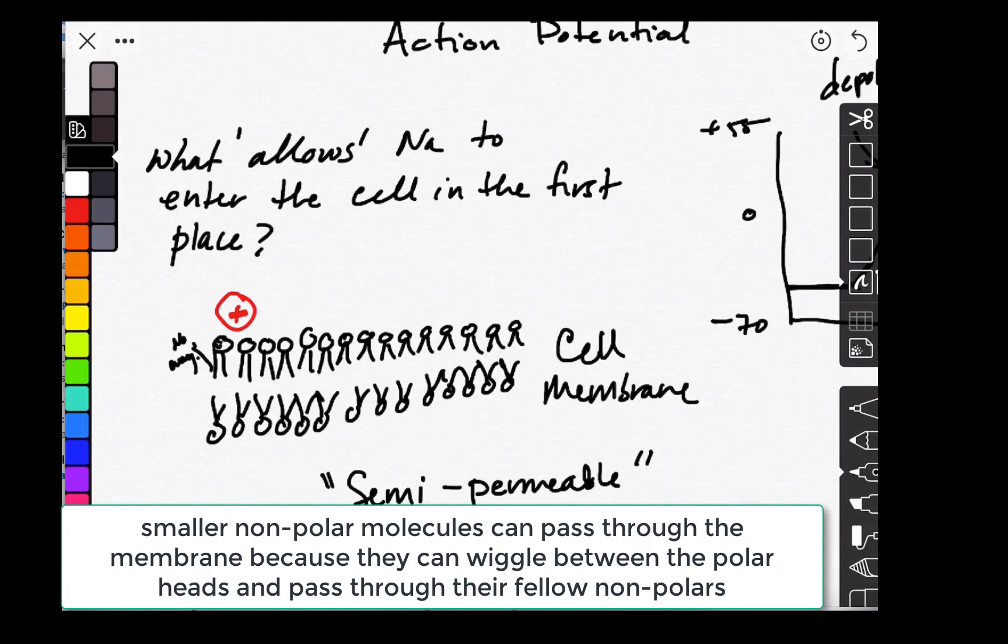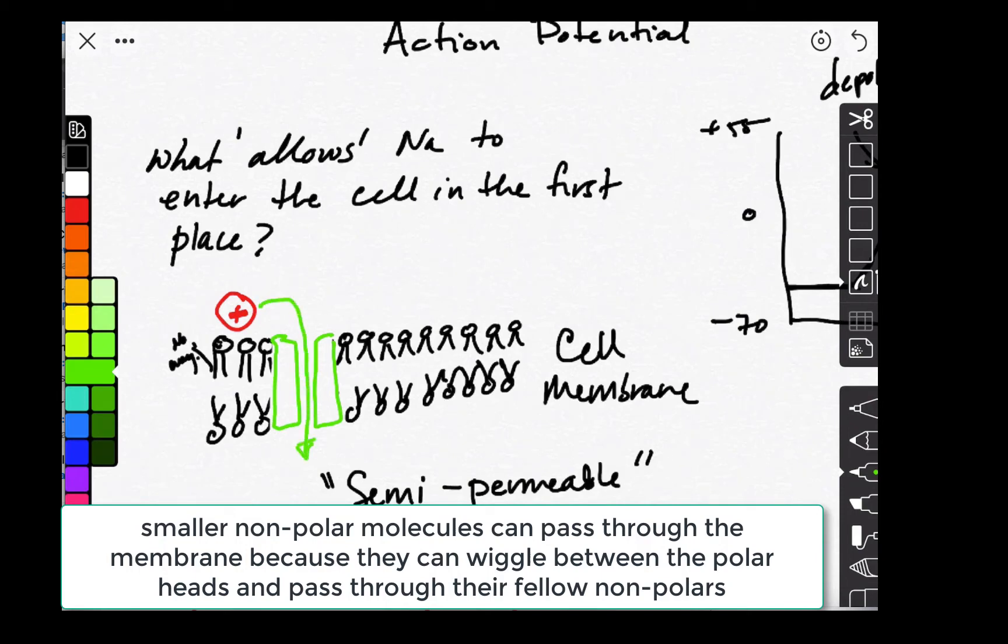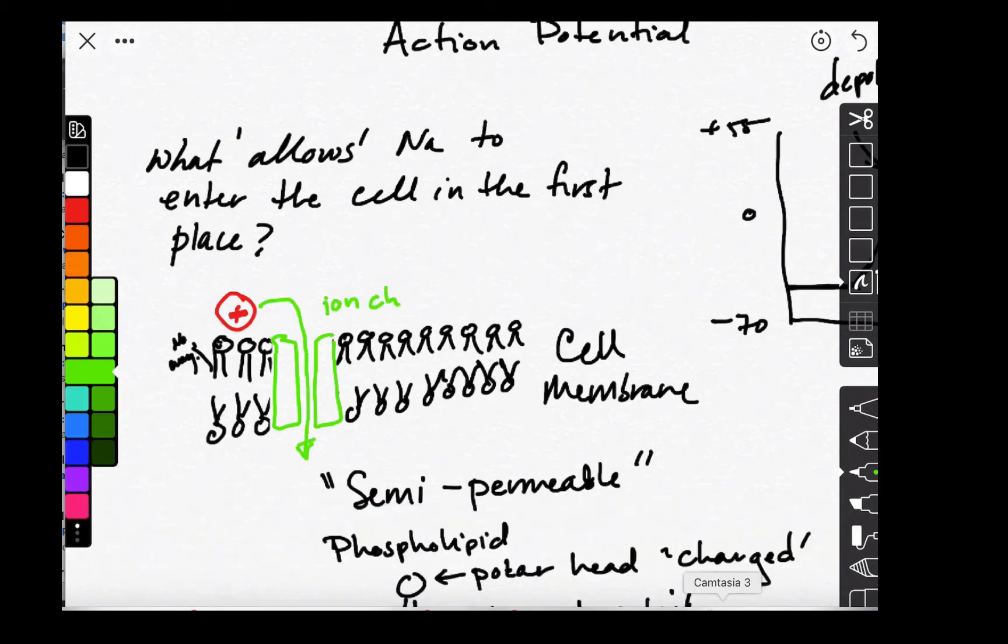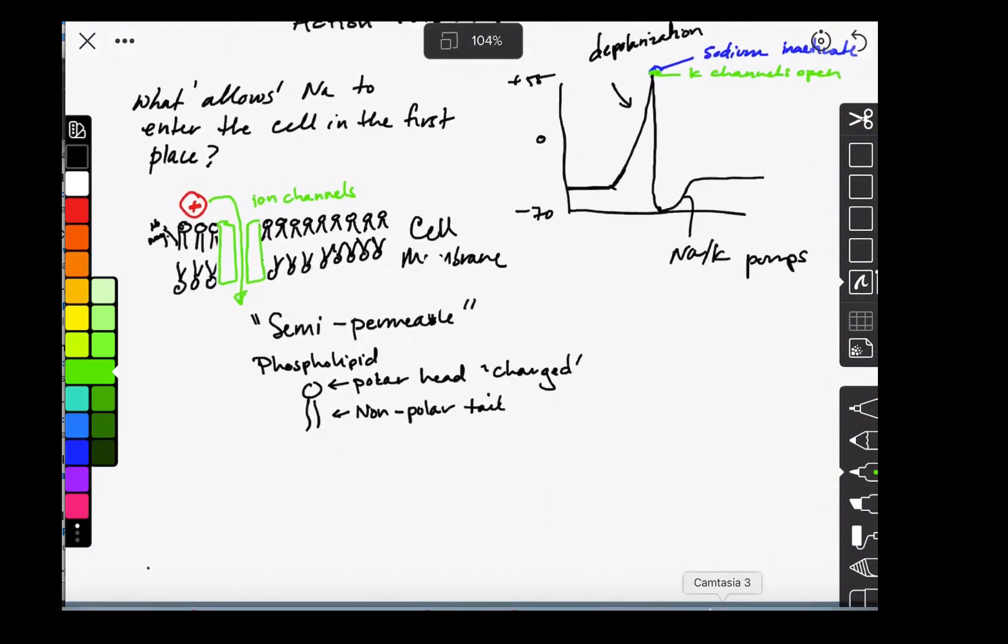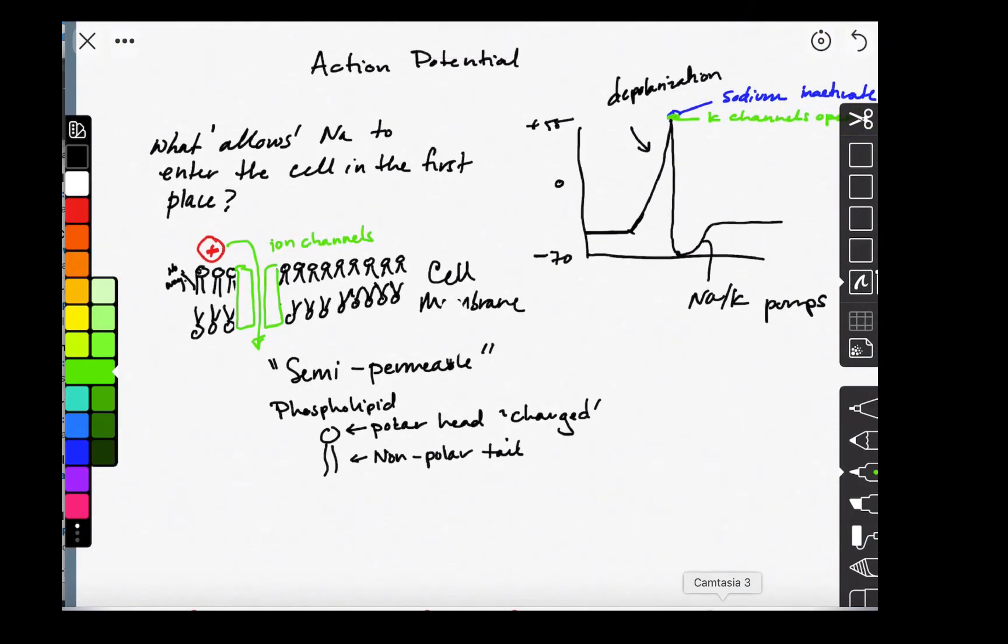So the way that these ions have to get through the cell membrane is through ion channels. And these are proteins that are in the membrane. They're basically like little doggy doors for the ions. So when we're asking this question of what allows sodium to move in the first place, one of the things we need to think about is what causes the channel to open.